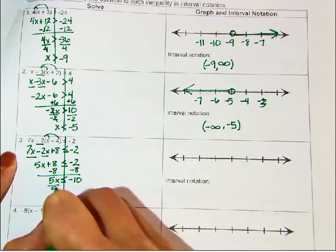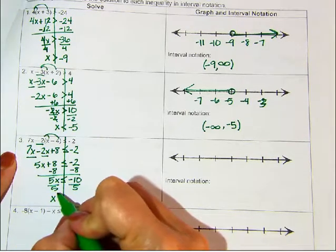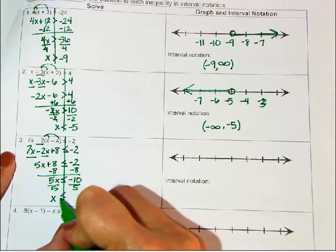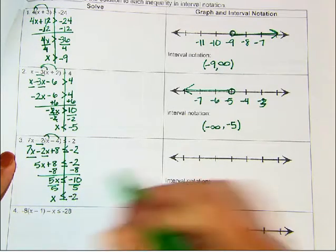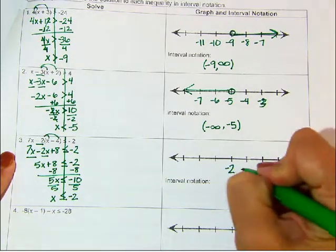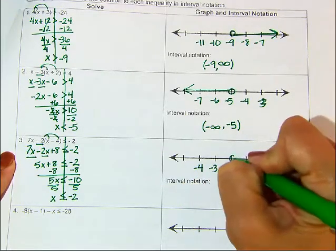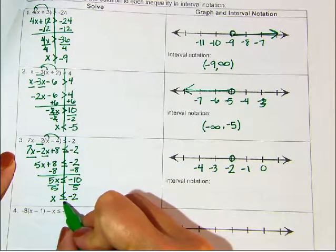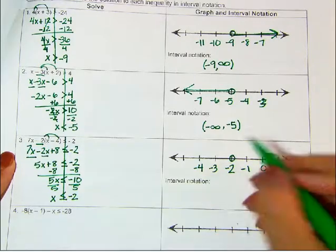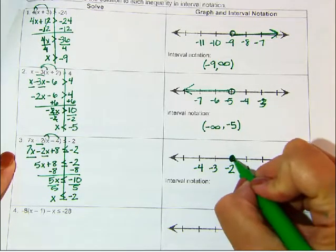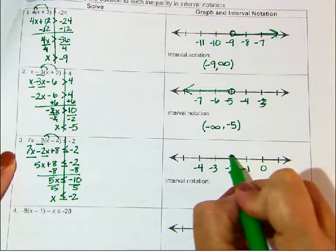X. I divided by a positive. So I leave my symbol the same. It's negative 2. So at negative 2, I'm going to put a circle. And it does say less than or equal to. It has that line underneath means I fill in my circle. And it's less than so it goes to the left.